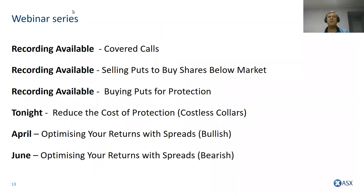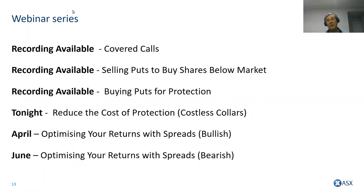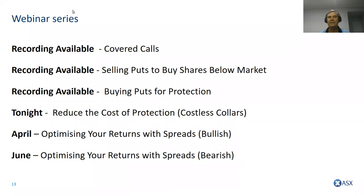With the costless collar, you can't lose too much if the market falls, but it caps your maximum returns. It reduces the cost of protection down to zero — if anything, you should actually be earning a tiny income stream, which helps pay for brokerage. Looking ahead, in April and June we'll shift tack slightly, looking at spread transactions to optimise returns in bullish and bearish markets, especially when they're range bound.